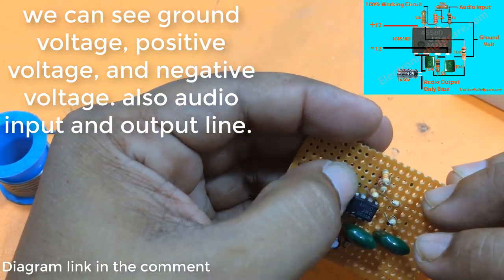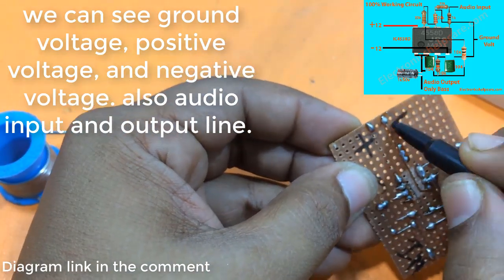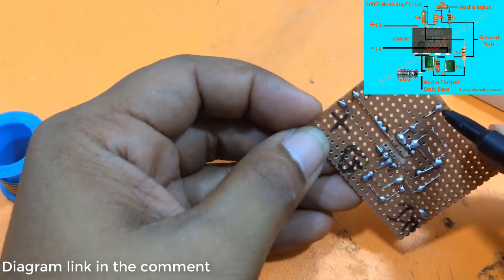We can see ground voltage, positive voltage, and negative voltage, also audio input and output line.